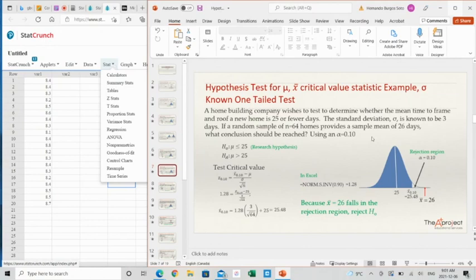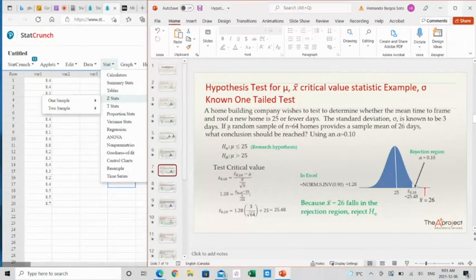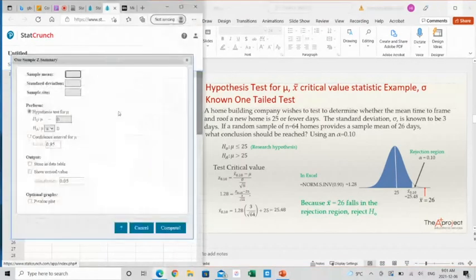Go here to Stats. Here we know the standard deviation. The standard deviation sigma is known to be 3. This is the population standard deviation. Use Stats with Summary. Here we have a summary.